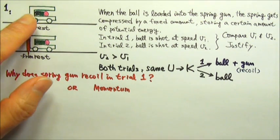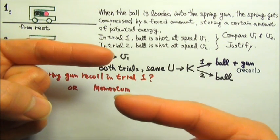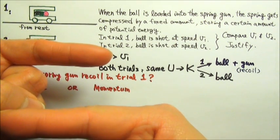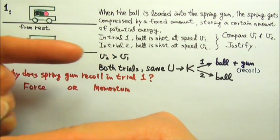For the force approach, the spring gun pushes on the ball to the right, so the ball pushes back on the spring gun to the left. Therefore, the spring gun accelerates to the left as the ball accelerates to the right.